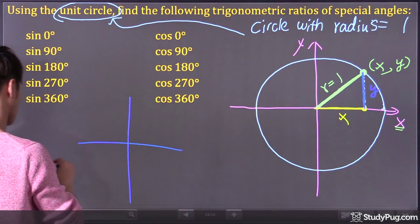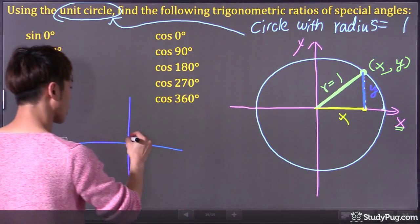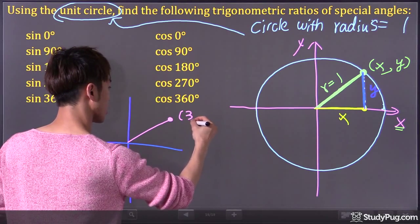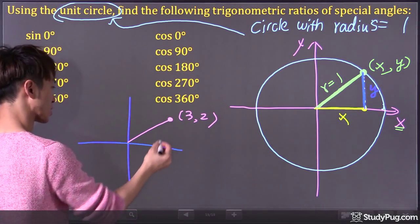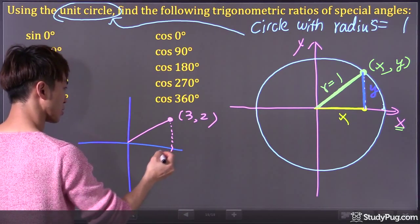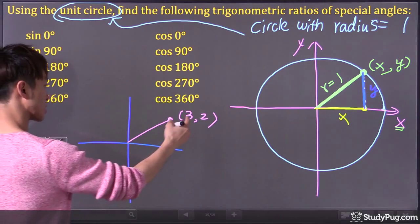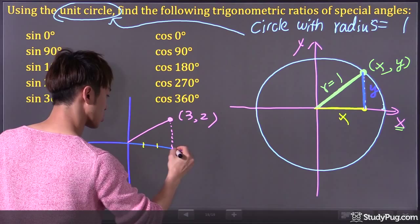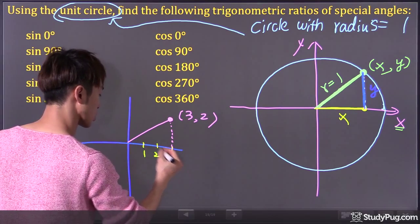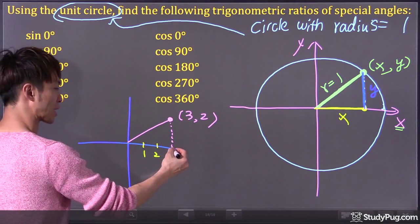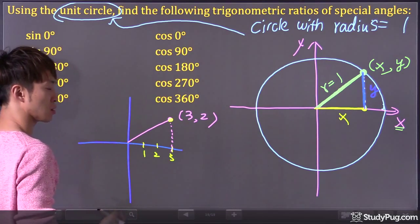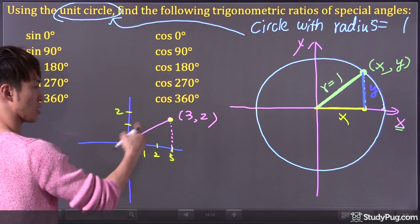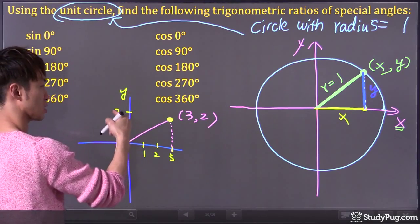For example, let's say if I have a point (3, 2). That means when X is 3, here we have 1, 2, 3 — that's why the X-coordinate is 3. When Y is 2, here we have 1, 2 — that's why the Y-coordinate is 2.